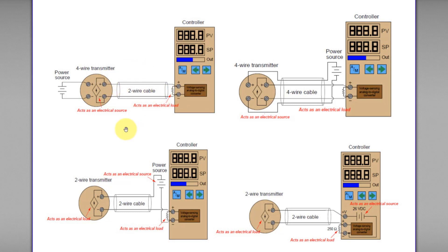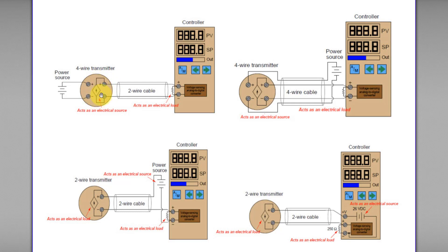As I mentioned earlier, a circuit should have a minimum of one power source and one load. So this transmitter needs to act as an electrical source. Here we use a four-wire transmitter. What is the difference between a four-wire transmitter and a two-wire transmitter? A four-wire transmitter has four wires: two wires connect to an external power source to power up the transmitter, and another two wires are used for signal communication in the loop. So this external power source powers the transmitter, and the transmitter output terminal is used for signal communication between the transmitter and the controller. So this transmitter acts as an electrical source.